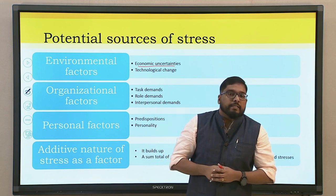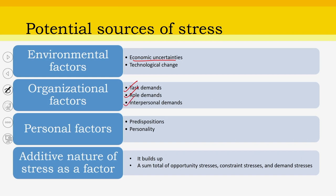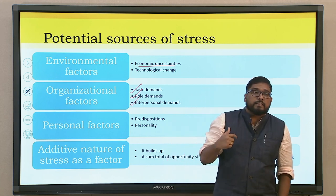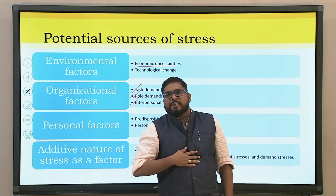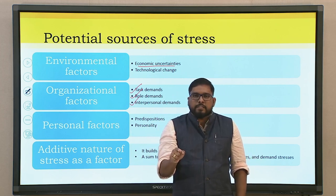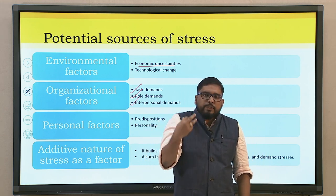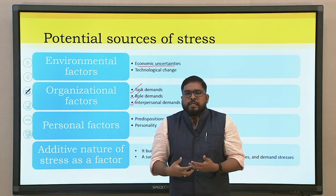The second critical aspect is organizational factors. Some important elements are task demands, role demands, and interpersonal demands. Task is not a small aspect — when looking into task demands you have to understand critical aspects like task uncertainty. Uncertainty of a task is always challenging or dangerous. Not only uncertainty but also task complexity — if the task is more complex, even a group may not be able to solve it, inducing stress.